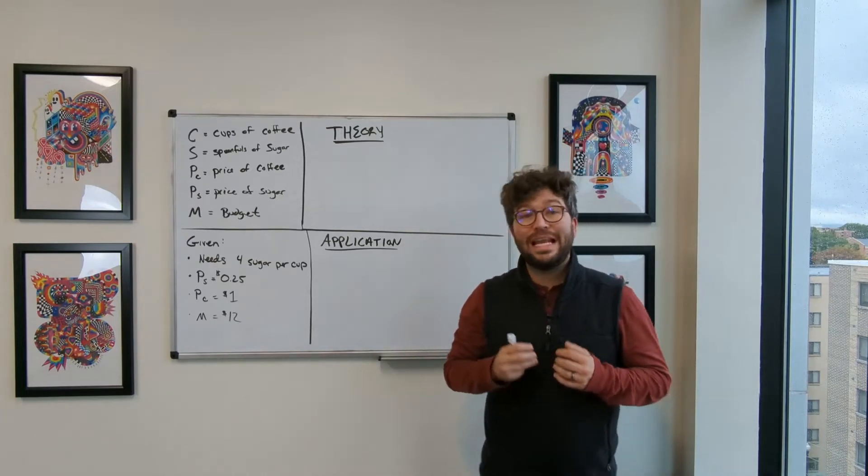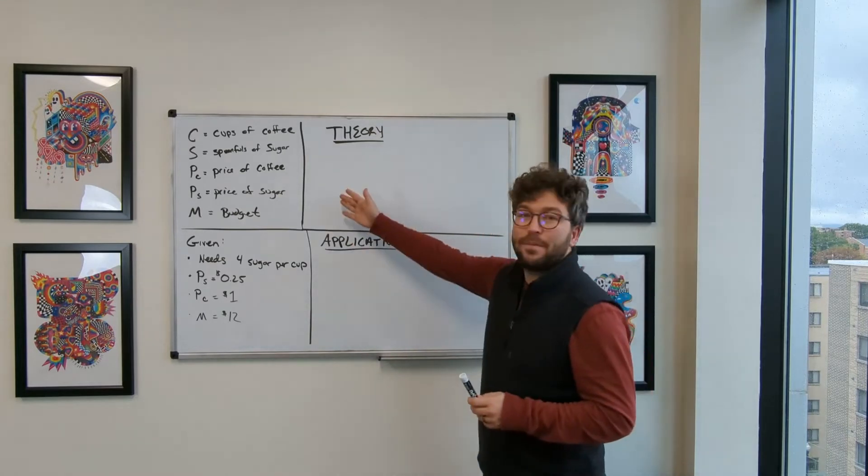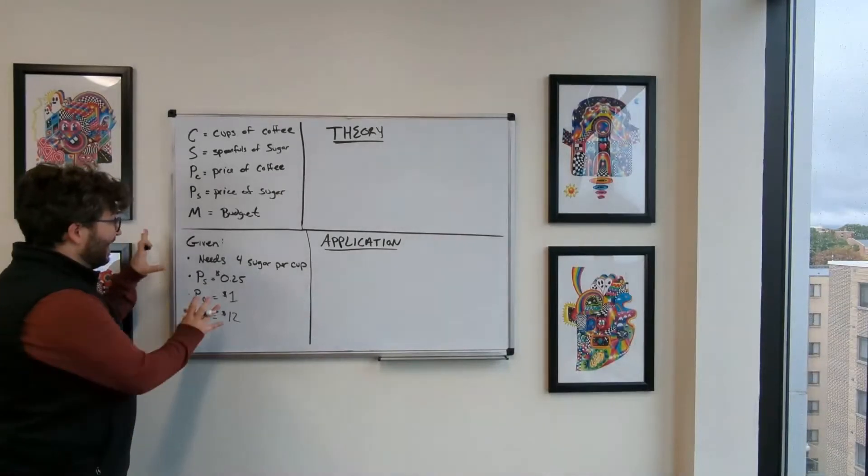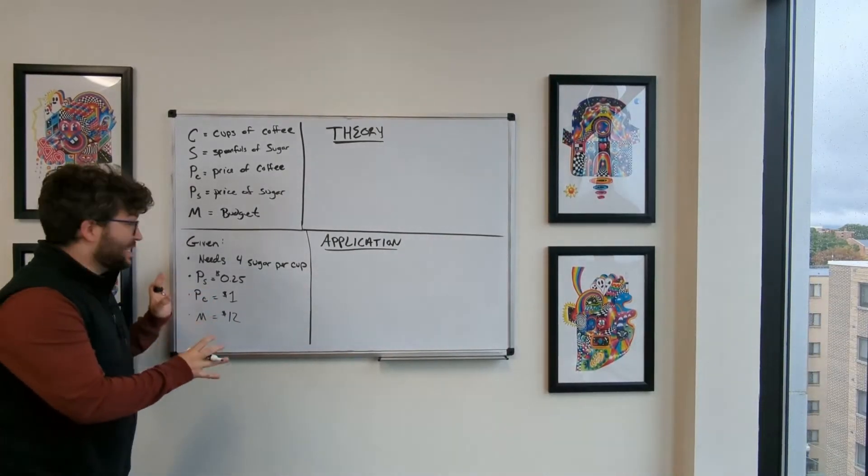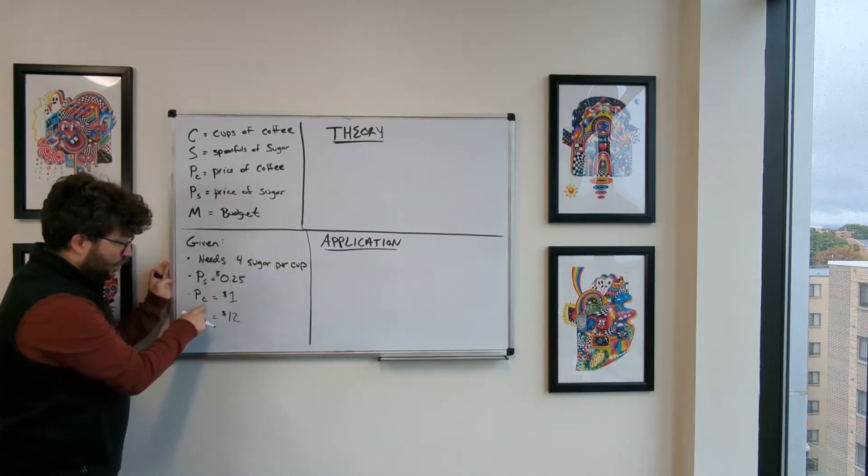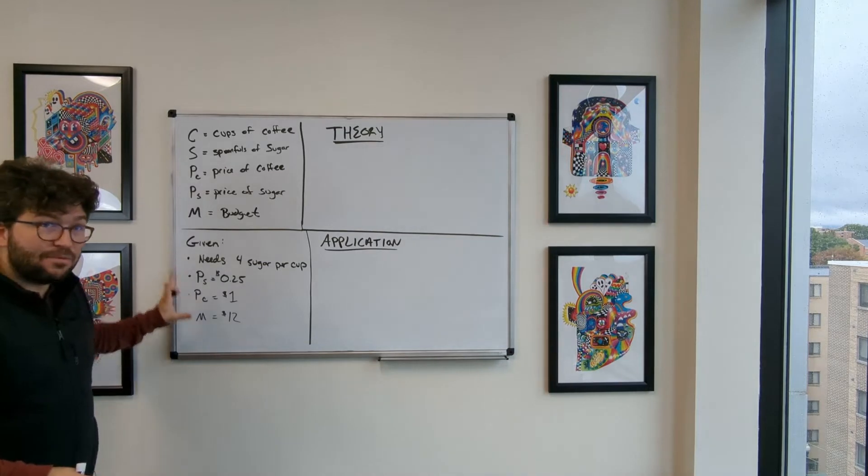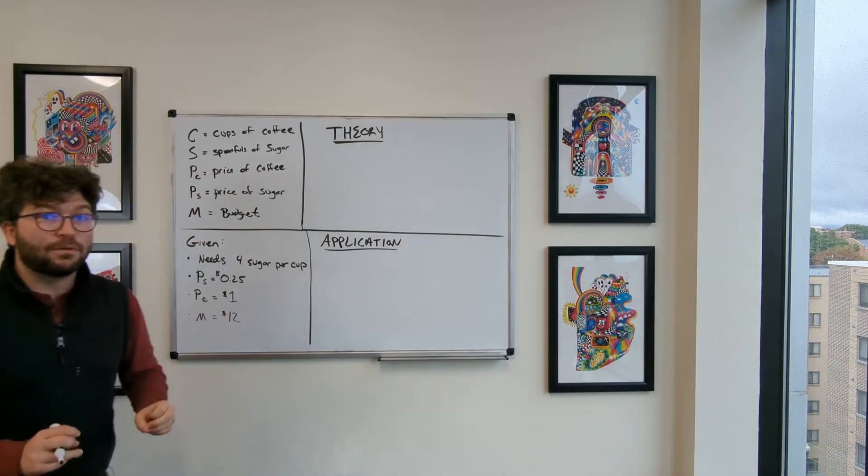Today we are going to go over an intermediate microeconomics question and I have the information right up here. In this question we're given some information, some data. We know that this individual needs four sugars per cup of coffee, we're given the price of sugar, the price of coffee, and our budget. But before we use these numbers in an application, let's make sure you're comfortable with the theory.